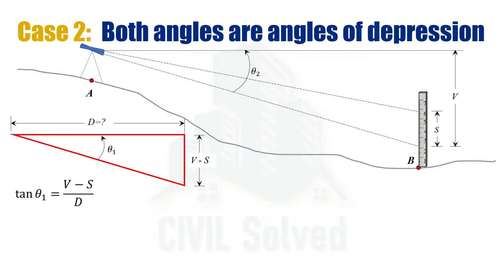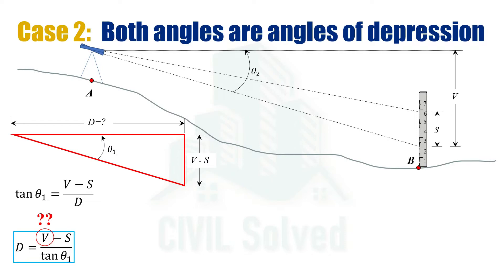So tan theta 1 equals (V minus S) over D. By cross-multiplying we get the equation for D. In this equation there are three variables: V, S, and theta 1. S is the staff intercept which can be noted in the field, and theta 1 can also be noted in the field. V is the only variable which cannot be directly noted in the field.